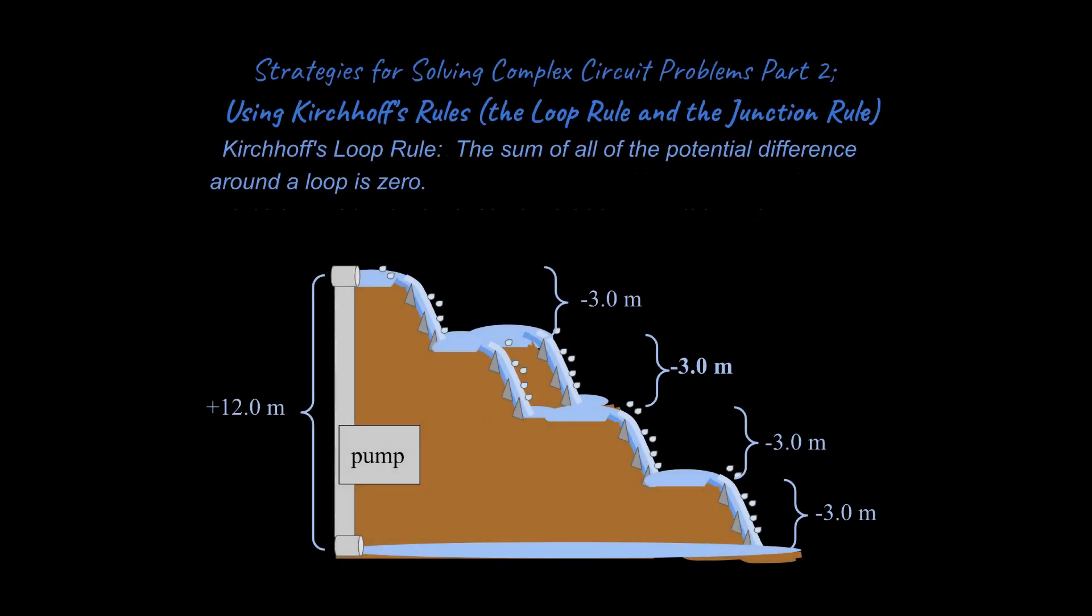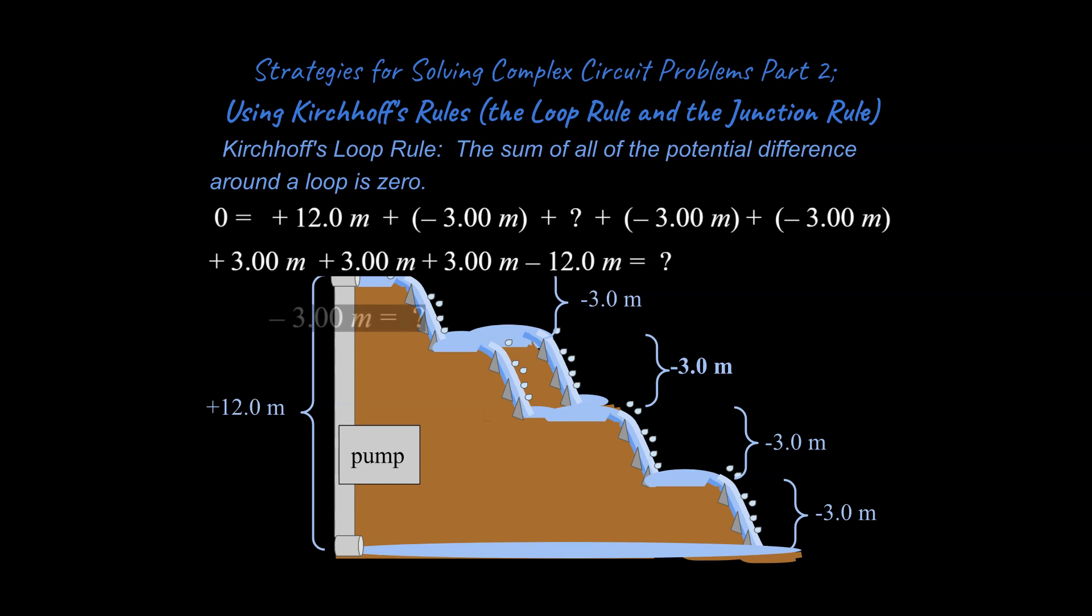So if we were to summarize Kirchhoff's loop rule, we could say the sum of all the potential difference around a loop is zero. This is an important rule that you're going to need to know, and here's some math that kind of backs up what we were just talking about, and it turns out that that drop, of course, is going to be minus three meters.